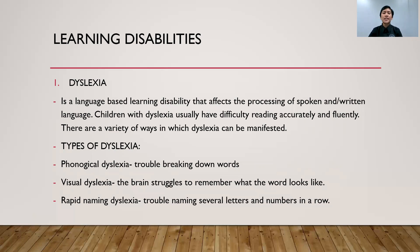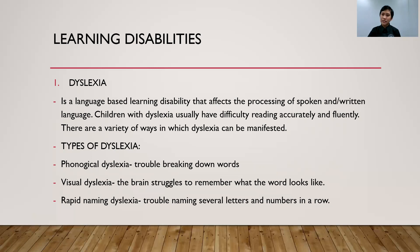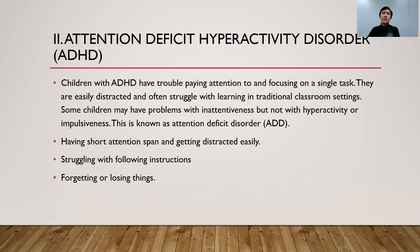Next, we have rapid naming dyslexia. When someone has rapid naming dyslexia, it's about trouble in naming several letters — like B, C, D — and numbers in a row, like one, two, three. They have difficulty with that.